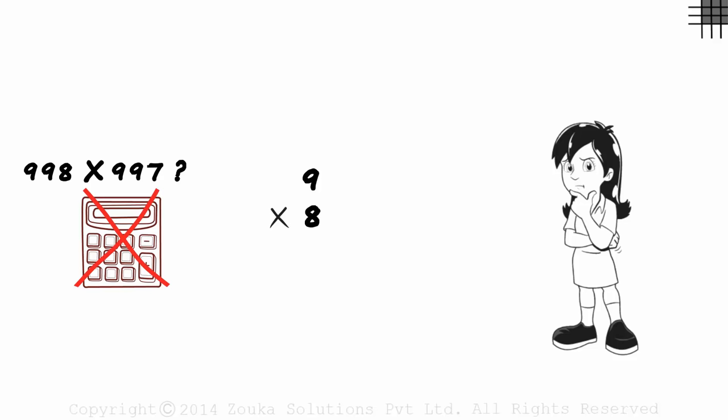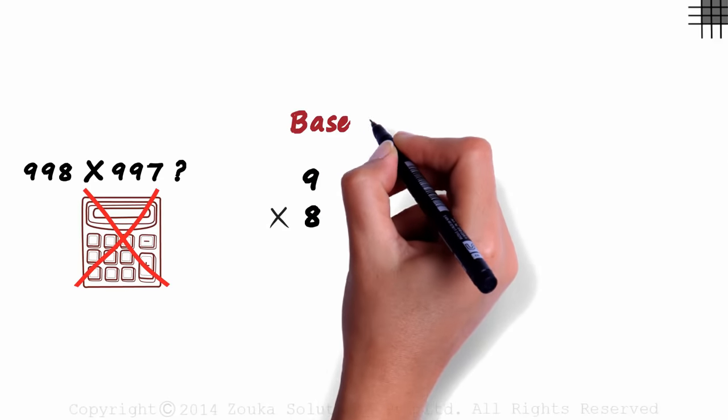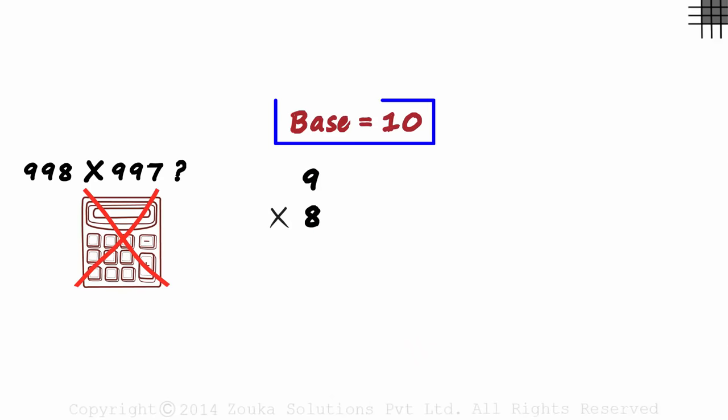We use the concept of base to solve multiplication problems quickly. And bases are generally powers of 10, like 10, 100, 1000 and so on. When we are given the multiplication problem, the first thing we should ask ourselves is, which base is close to both the numbers? Here, both numbers are close to 10. So we can say that the base is 10. Once the base is decided, life becomes really easy.